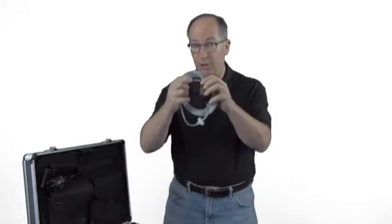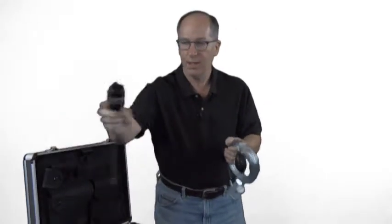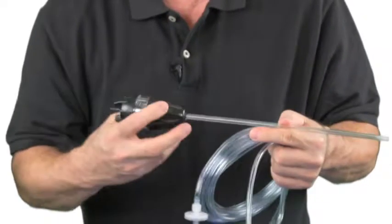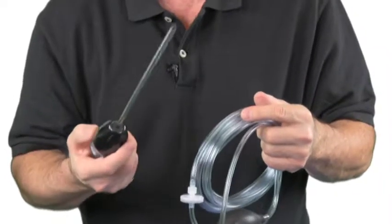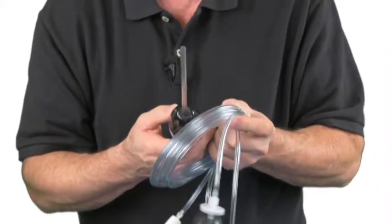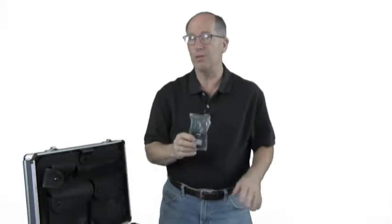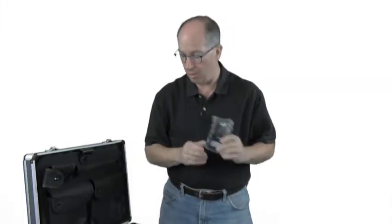So we've got the tubing here along with the sample probe and these can be attached to the instrument. Through the use of this squeeze bulb, you pull the sample up to the instrument. We have a leatherette case. It helps protect the instrument from bumps and grinds and so on.